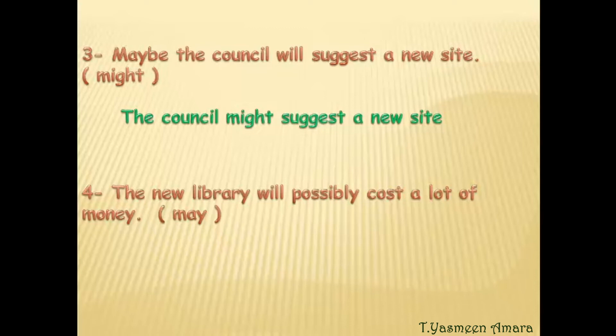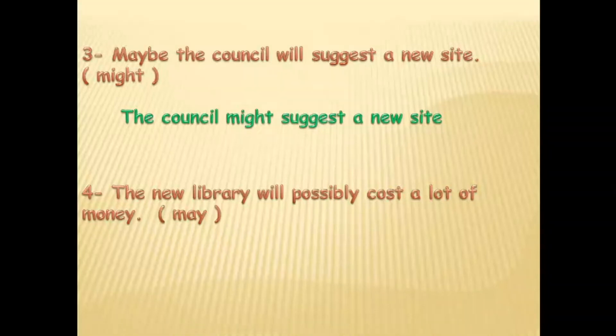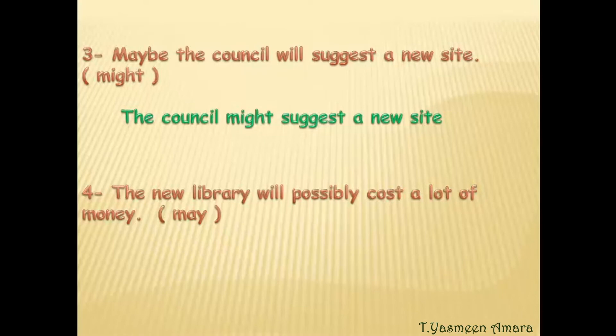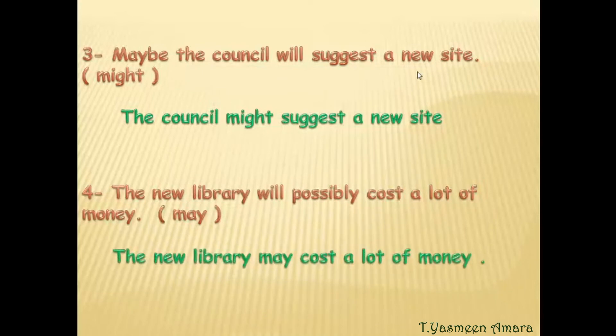Number four: 'The new library will possibly cost a lot of money' — the modal verb is 'may.' The subject is 'the library,' so the answer is: 'The new library may cost a lot of money.'